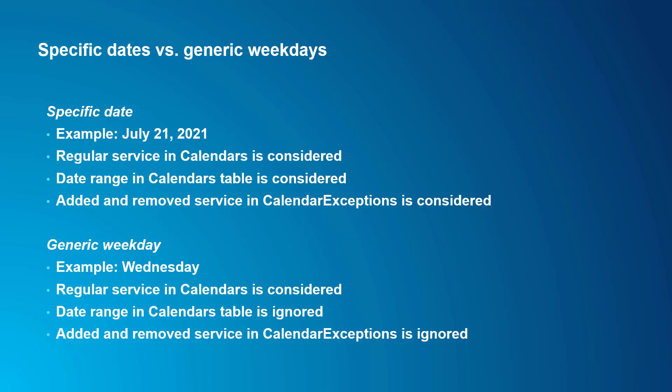However, there is one thing you really should understand, and that's the distinction between specific dates and generic weekdays. We touched on this a bit when we were talking about GTFS datasets. When you're doing analysis, you need to decide if you want to consider public transit service available on a specific date or on a generic weekday. So do you want to model a typical Wednesday? Or do you want to model a specific Wednesday representing a holiday or a special event? The public transit data model Calendars and Calendar Exceptions tables are the important ones here. Calendars defines regularly repeating service on weekdays, and Calendar Exceptions defines exceptions to the service, such as service added or subtracted for holidays.